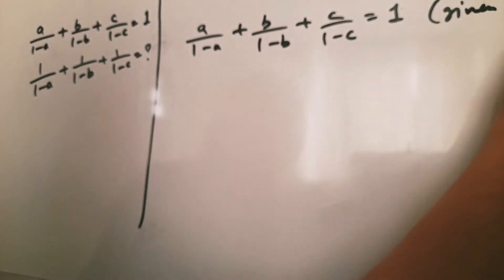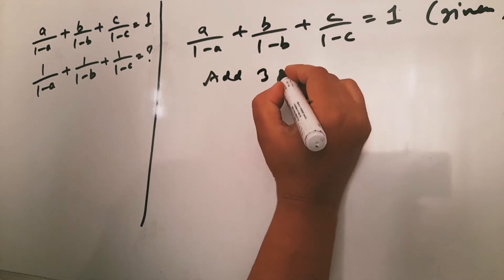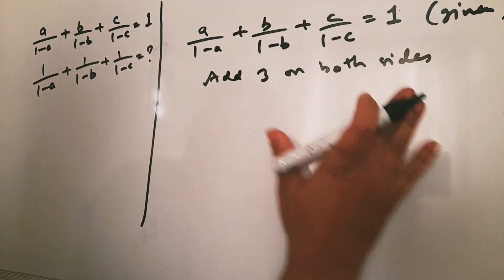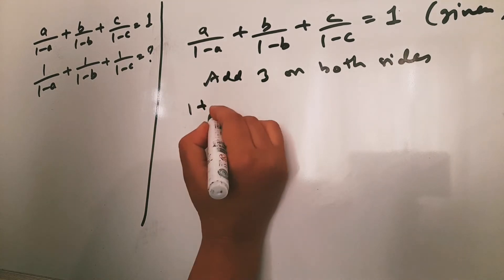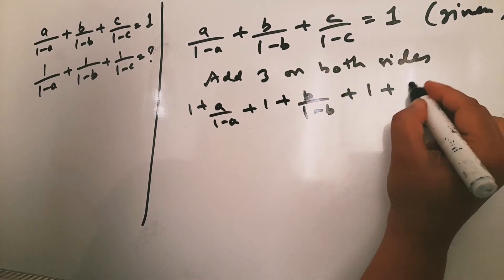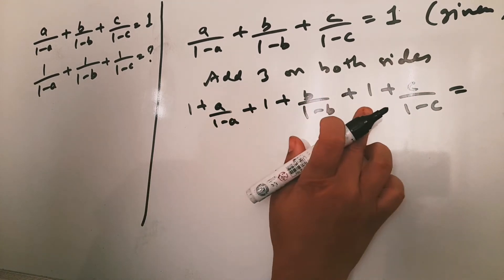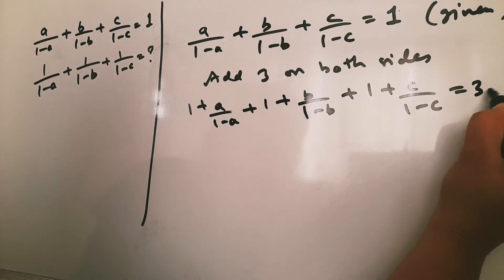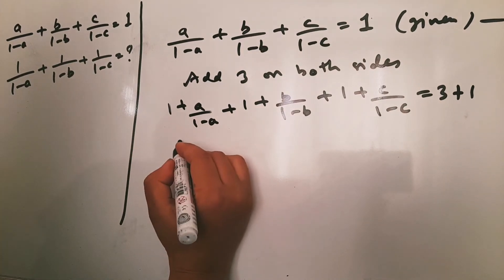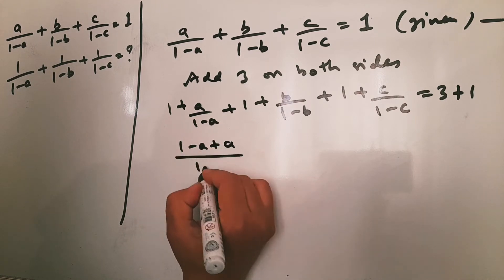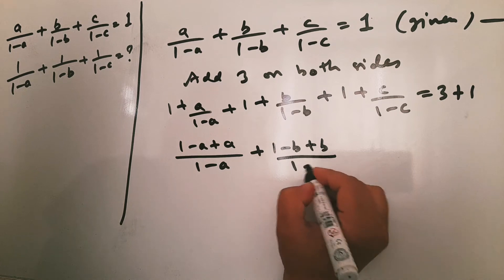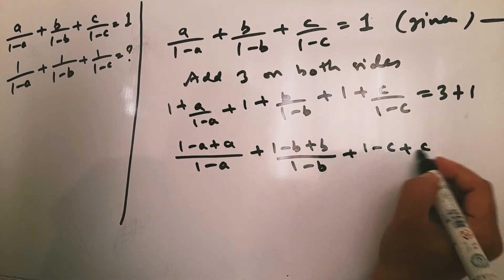On both sides, left and right, we add 3. How do we do this? If we add 1 to A by (1 minus A), then we add 1 to B by (1 minus B), and here we add 1 to C by (1 minus C), and here we add 1 plus 1 plus 1, which is 3. So the right hand side becomes 1 plus 3 equals 4. Now we get: (1 minus A plus A) by (1 minus A), plus (1 minus B plus B) by (1 minus B), plus (1 minus C plus C) by (1 minus C), which gives the value 4.